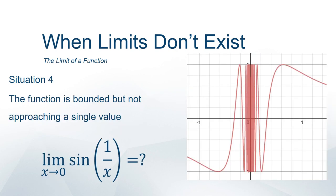The last case is where the function is bounded but we can't get closer and closer to any single value. This is the function sine of 1 over x. As x gets close to 0, the frequency of the sine function oscillates wildly, bouncing between negative 1 and 1. As x gets closer to 0, f of x does not get close to anything — it keeps oscillating infinitely, so the limit does not exist.